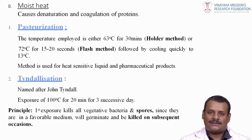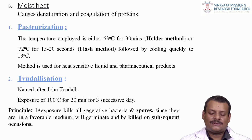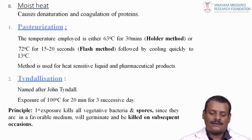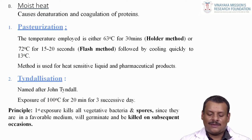For moist heat, sterilization is achieved by denaturation and coagulation of proteins. In pasteurization, the temperature employed is either 60°C for 30 minutes (holder method) or 72°C for 15 to 20 seconds (flash method), followed by rapid cooling to 13°C. This method is used for heat-sensitive liquids and pharmaceutical products. Tyndallization, named after John Tyndall, involves exposure to 100°C for 20 minutes on 3 successive days; the first exposure kills vegetative bacteria, and spores germinating in the favorable medium are killed on subsequent occasions.